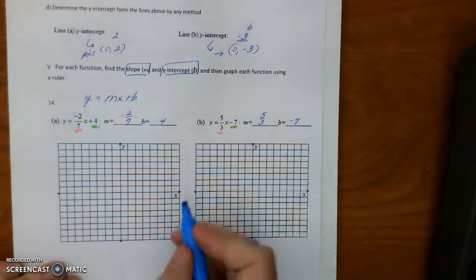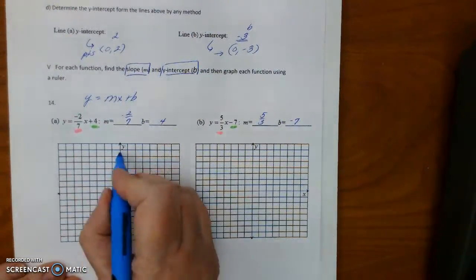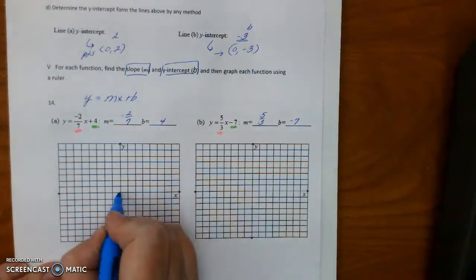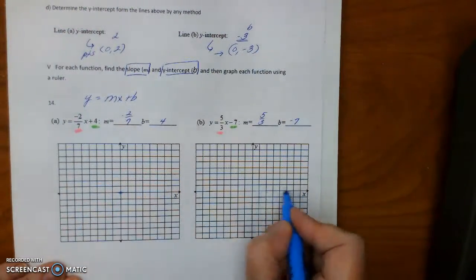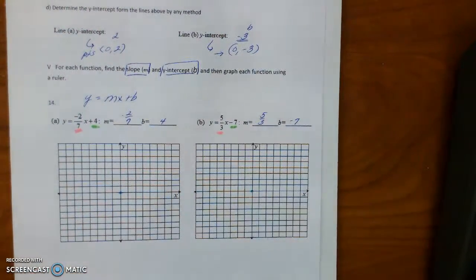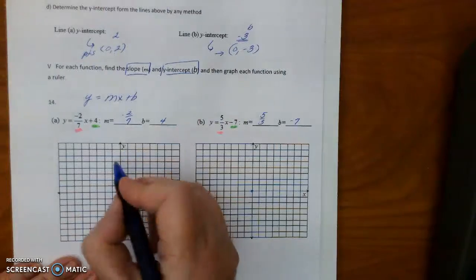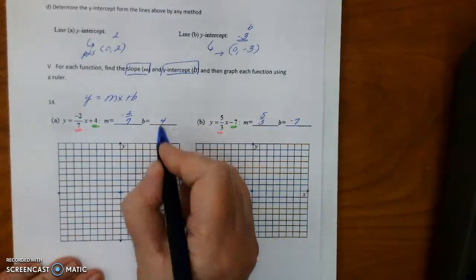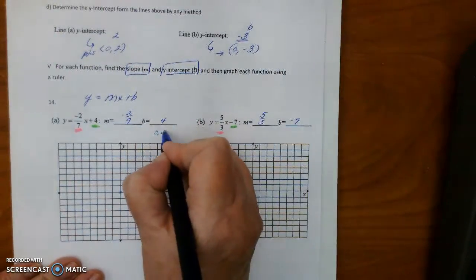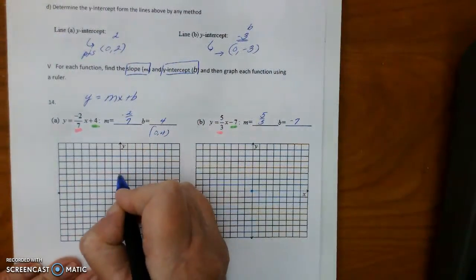Now I'm going to make a point for the origin, 0, 0, where the X and the Y coordinate. So what we have to do to graph it is we are going to go up to 0, 4 because B would be 0, 4, 1, 2, 3, 4.